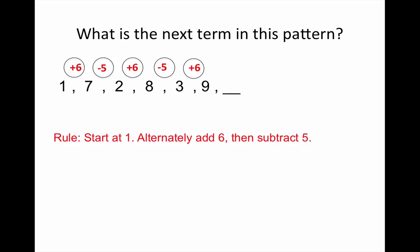So our pattern rule is to start at 1 and alternately add 6, then subtract 5. There's that key word alternately. We can see that the last step we did was add 6, so the next step is going to be take away 5 for the missing term of 4.